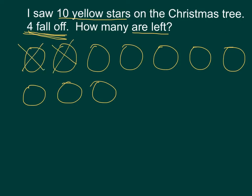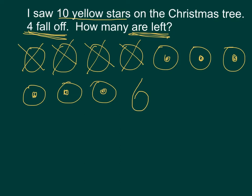The story asks how many are left. One, two, three, four, five, six are left. So my answer is six, but I have to let them know what I'm talking about. I go back in the story and I was talking about yellow stars — or I could just write stars as my unit or my label.